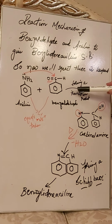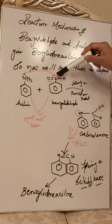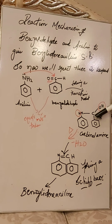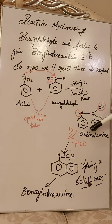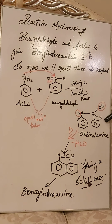After the nucleophilic attack, a transition product is formed. You can see that the carbon is now holding both an OH group and an amine group. This is not a stable arrangement, so it must lose something. This intermediate is called carbinolamine — it is a transition product formed temporarily and is not a permanent product.